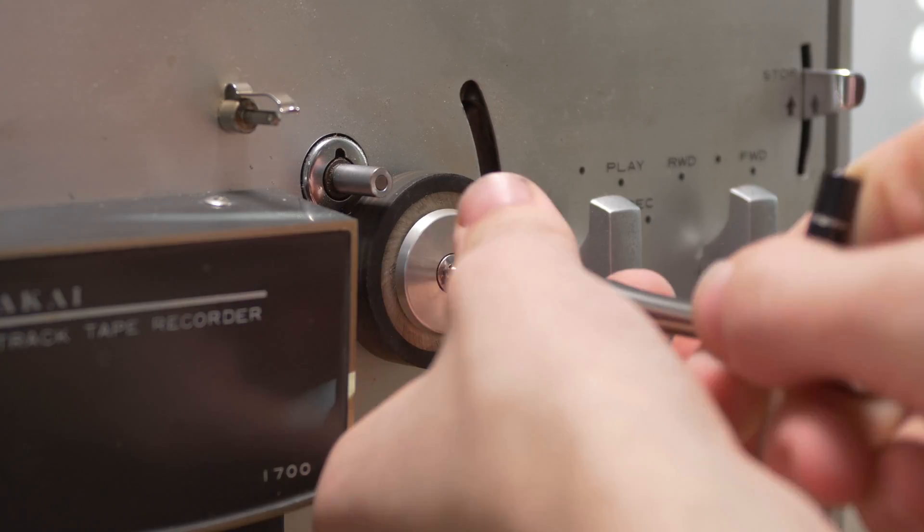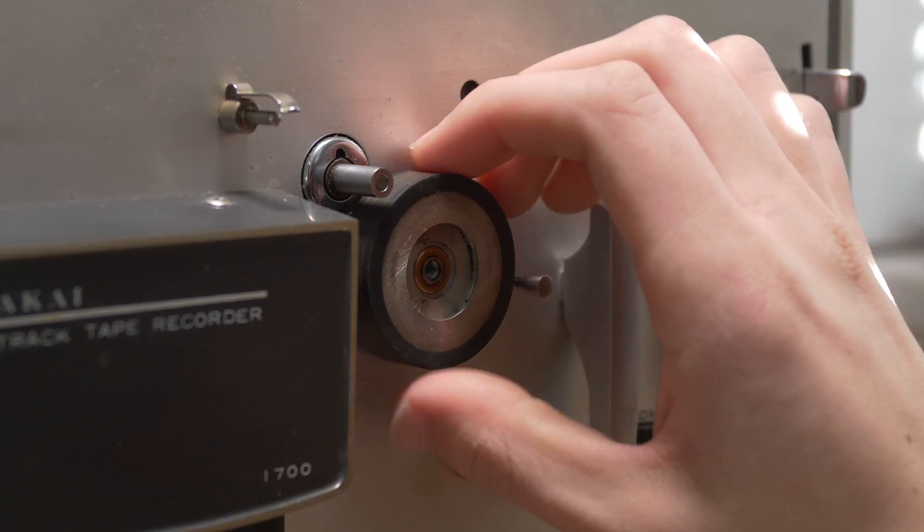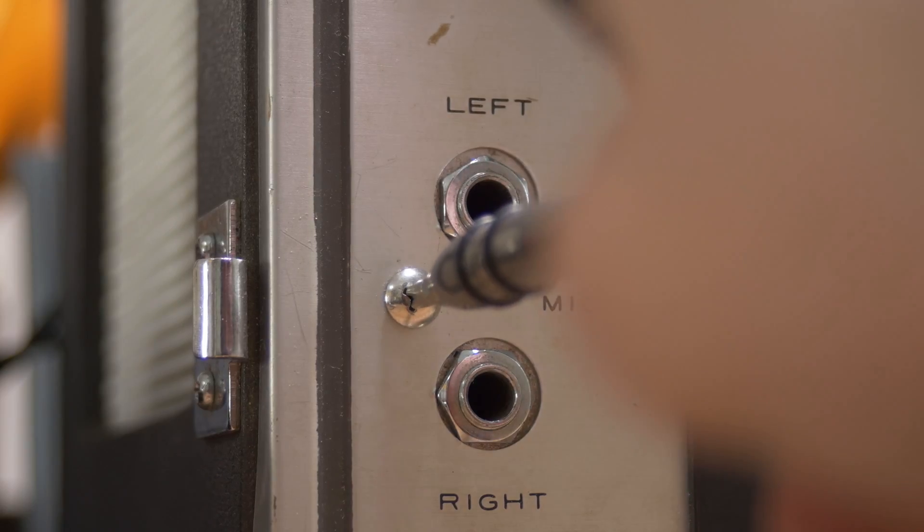The first step to accessing the capacitor that needed replacing is removing the front panel, which requires removing the pinch roller, the play, record, and fast forward, rewind knobs, and the four screws holding the panel on.